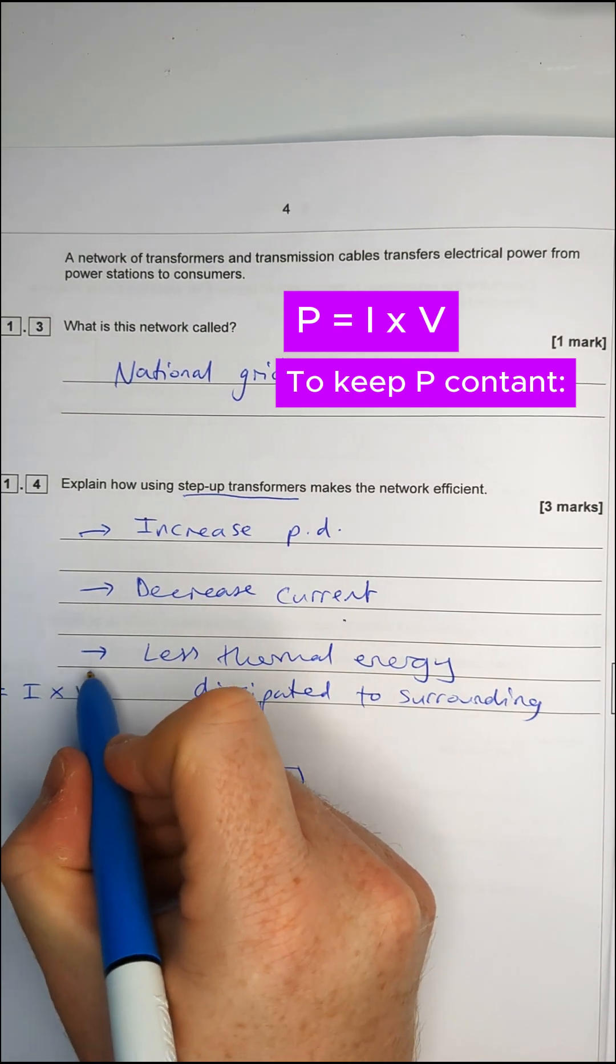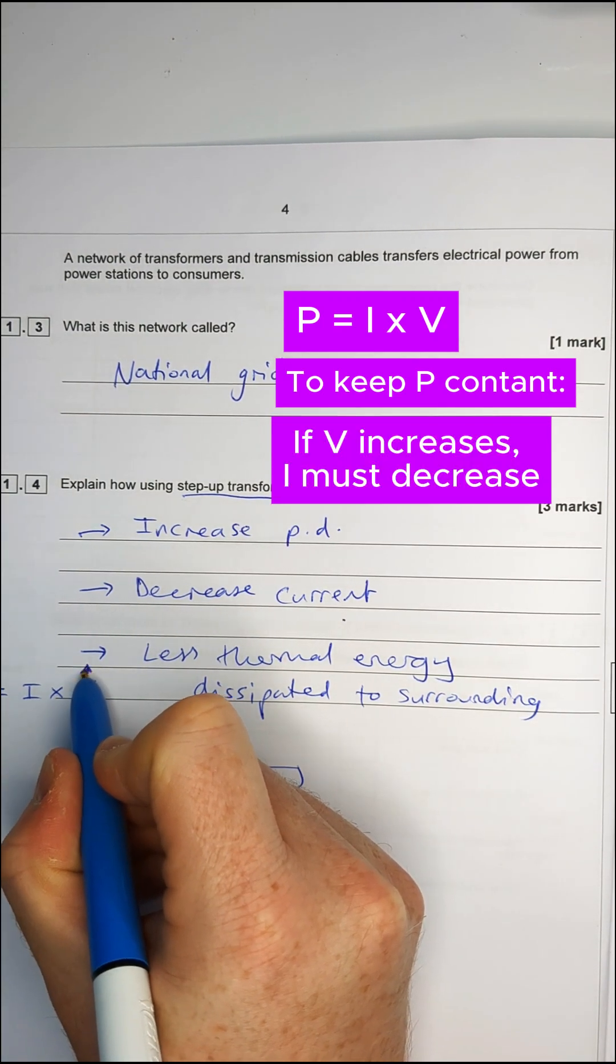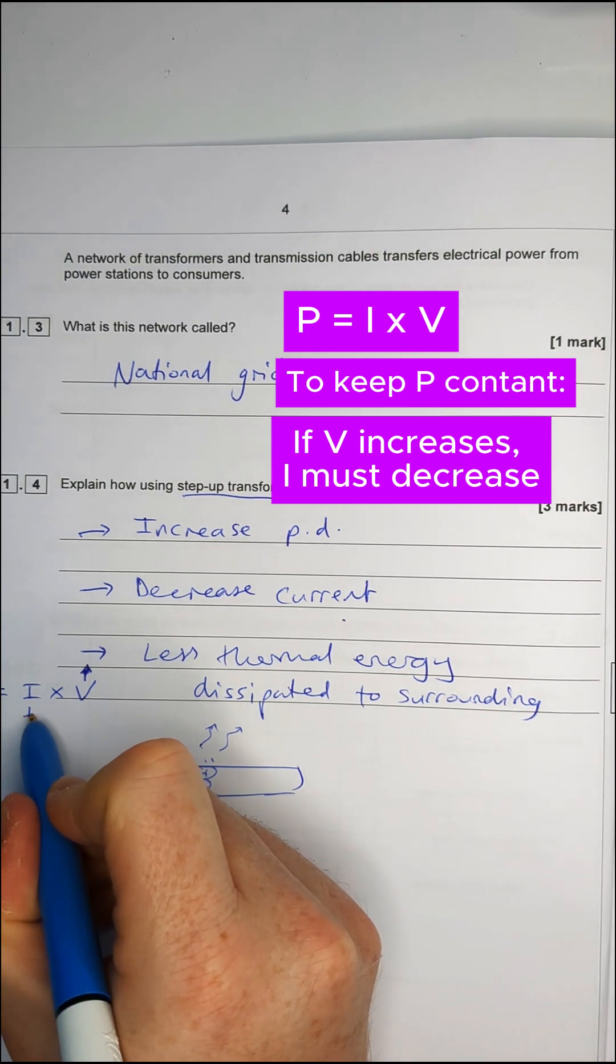So if I was to increase the potential difference, then that means to make the power the same, I would have to decrease the current.